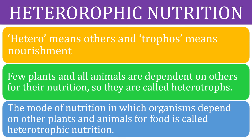Heterotrophic nutrition — 'hetero' means others and 'tropos' means nourishment. Few plants and all animals are dependent on others for their nutrition, so they are called heterotrophs. The mode of nutrition in which organisms depend on other plants and animals for food is called heterotrophic nutrition.